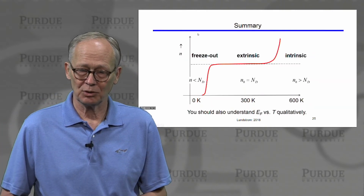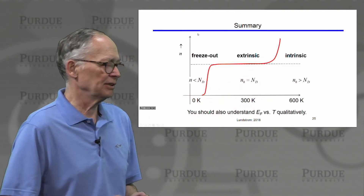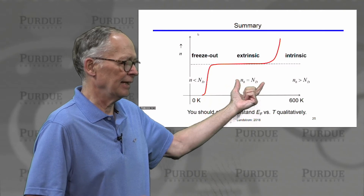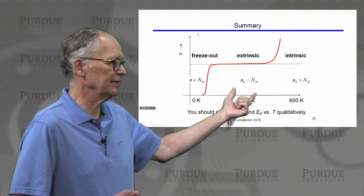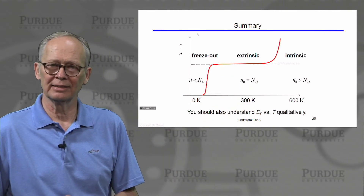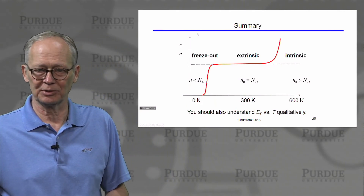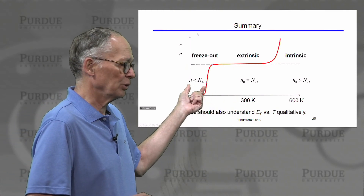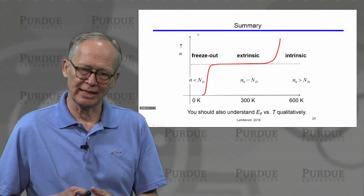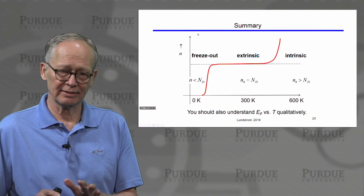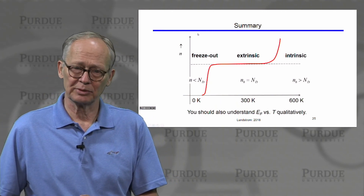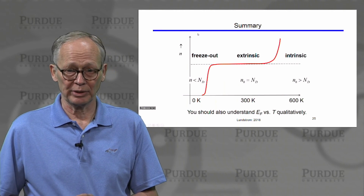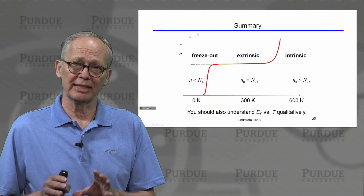We can summarize this whole unit in one slide. In the extrinsic region where donors are fully ionized and dopants overwhelm intrinsic carriers, life is simple: electron concentration equals donor density, or hole concentration equals acceptor density in a p-type sample. We get additional carriers when the semiconductor becomes hot and intrinsic carriers become important. We get fewer carriers when cooled down and dopants cannot be fully ionized. This quantitative and qualitative understanding of how carrier density varies with temperature is something you should appreciate. This wraps up Unit 3 on carrier concentrations; the next lecture will summarize the key points.